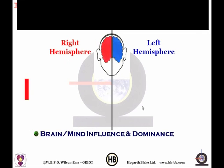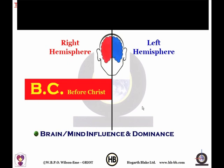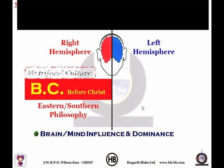We have BC, before Christ, where the right hemisphere was used more around the world. Eastern and Southern philosophy was in domination at that time. They had matrifocal culture, meaning there was a focus on the female, the feminine, the mother principles.